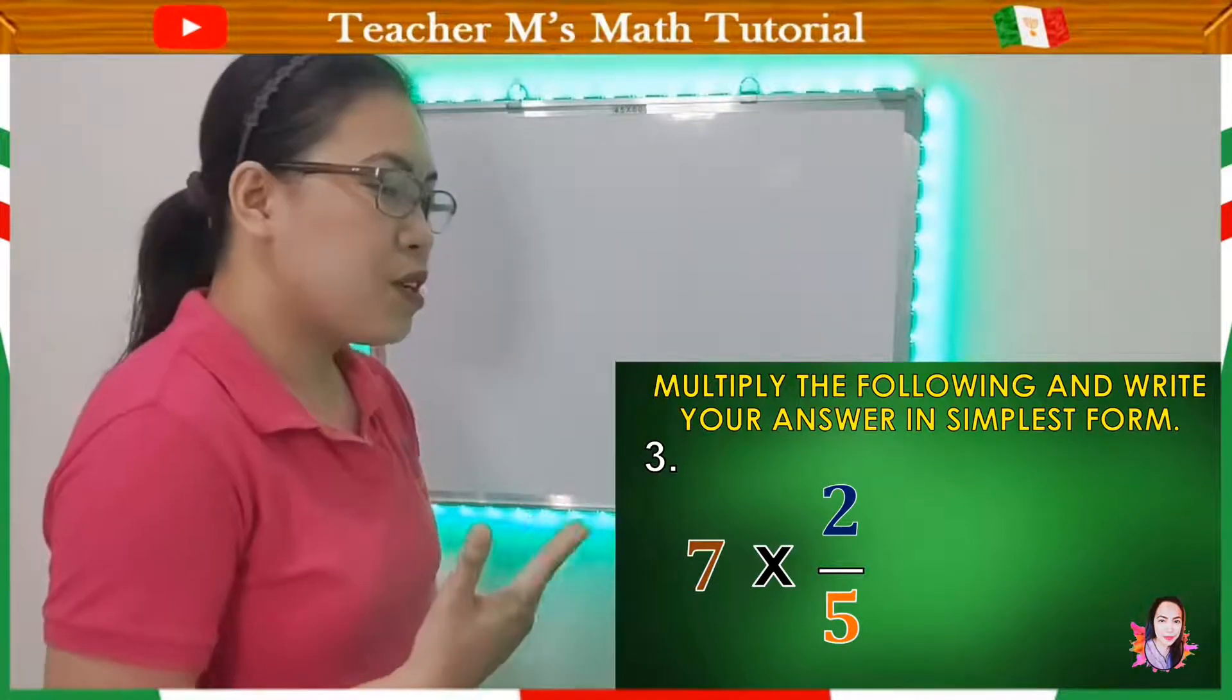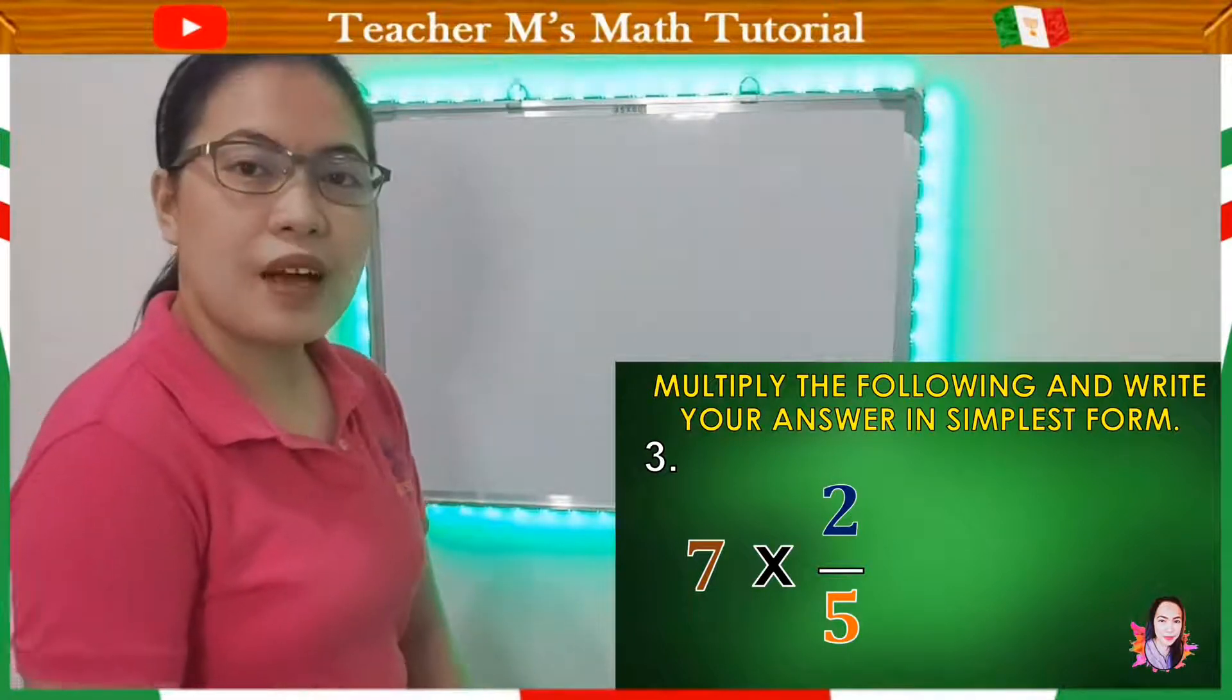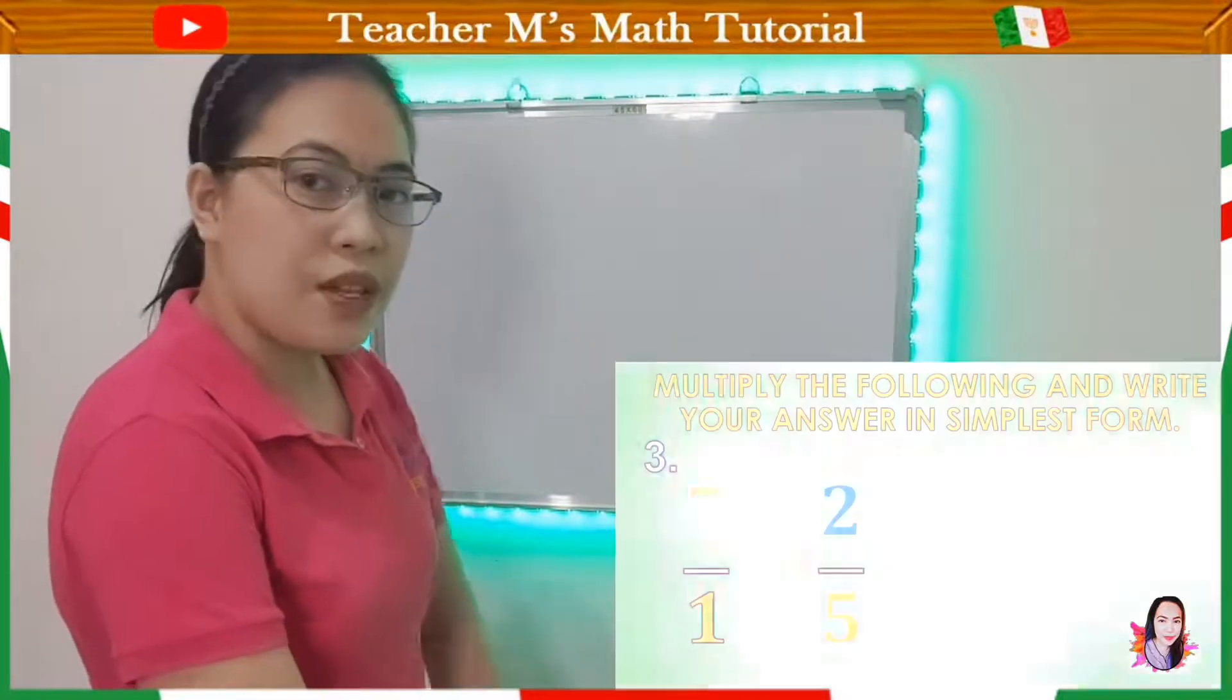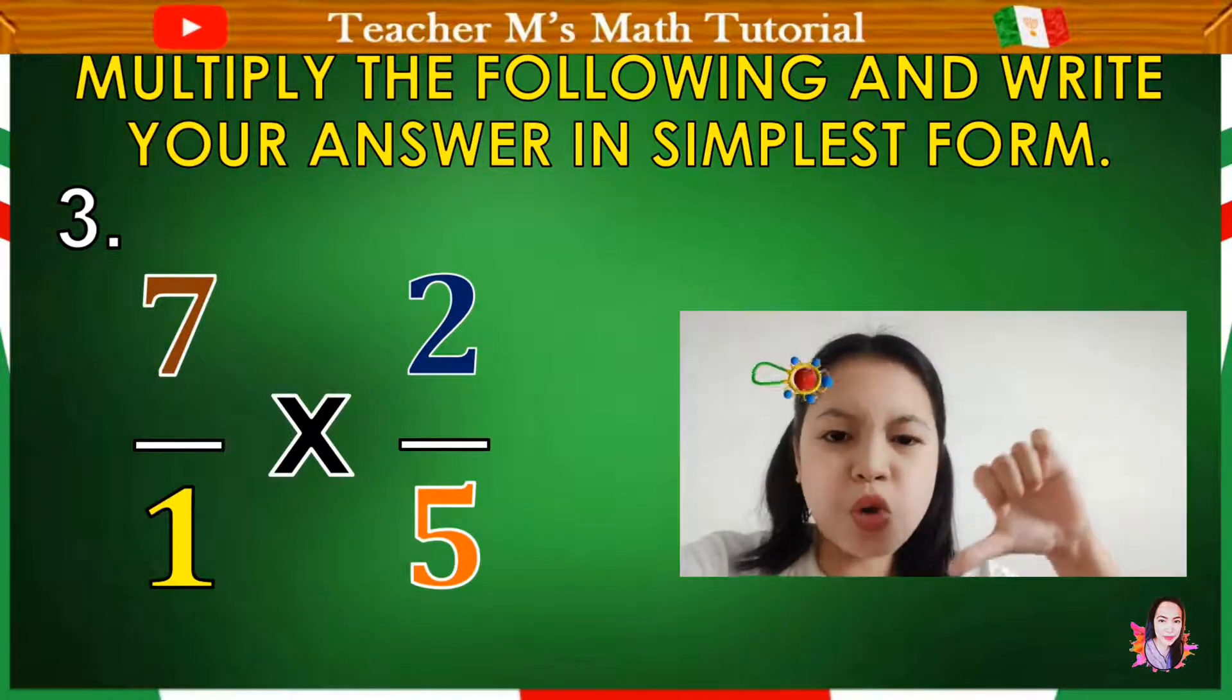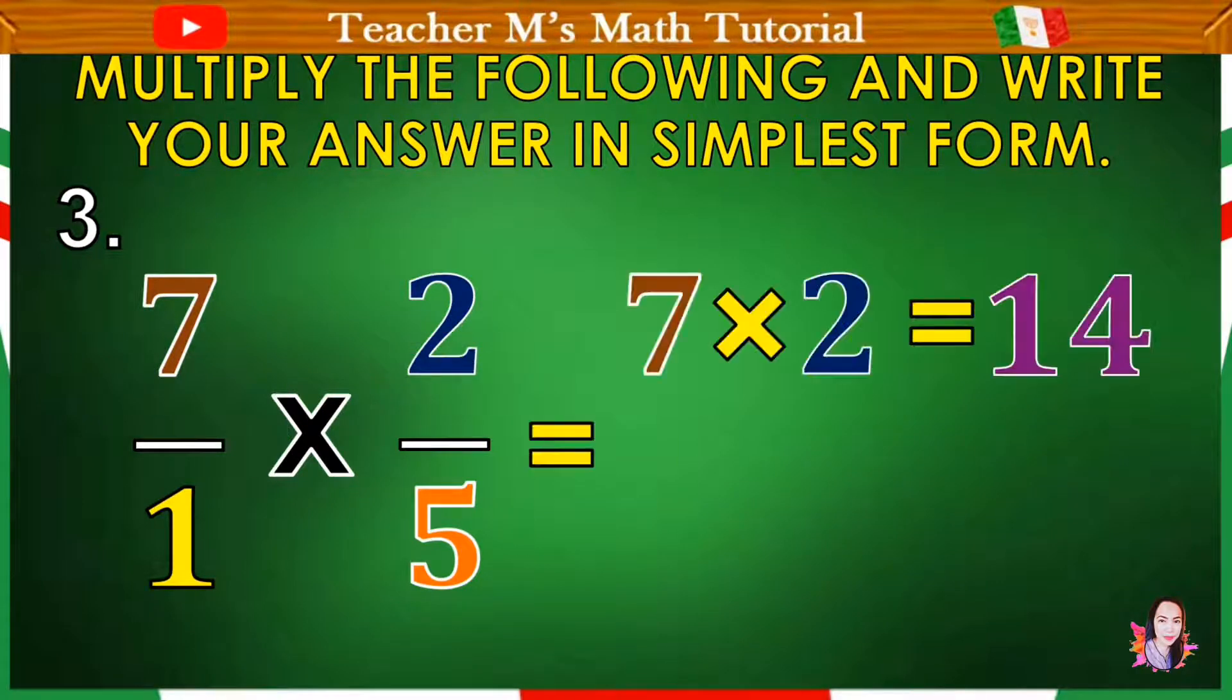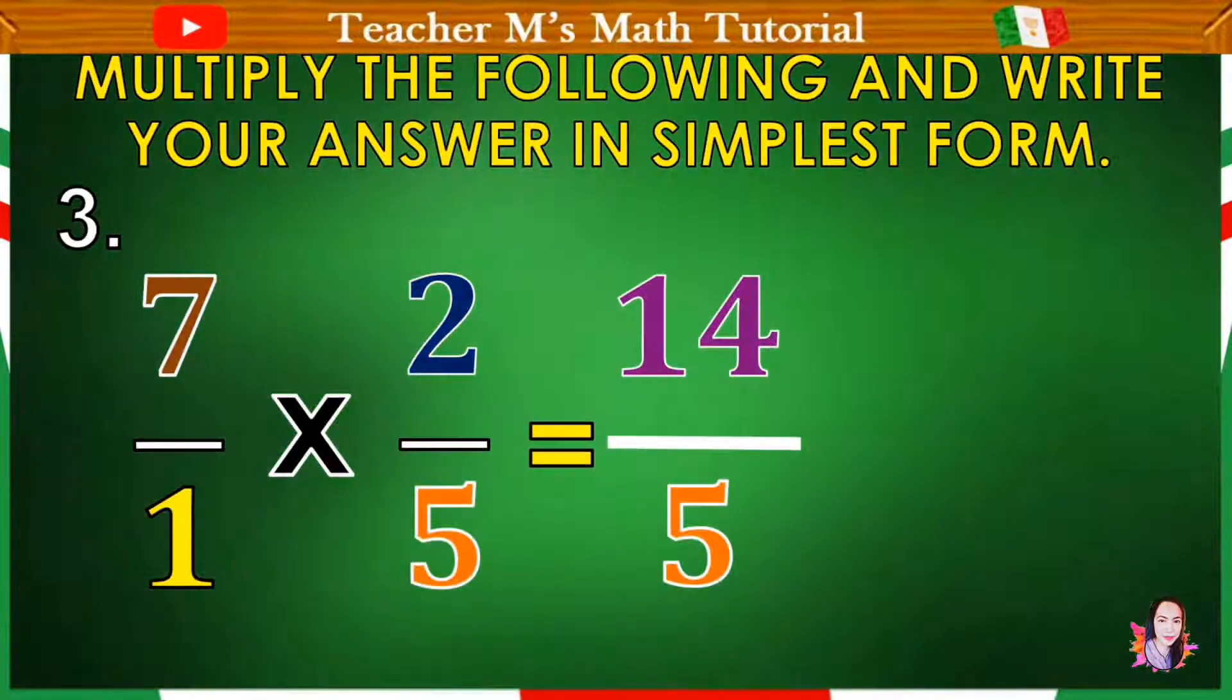So ano naman yung gagawin nyo kung imultiply natin yung whole number dun sa fraction? Anong kailangan kong gawin? So tapandaan, kapag whole number, kapag sinulat natin ito into fraction, the denominator will always be 1. So we can write it as 7 over 1 times 2 over 5. If cancellation is possible, then proceed to cancellation. So possible ba yung cancellation? Oo. Okay. So hindi pwede kasi walang common factors. Okay. So proceed now. 7 times 2 is 14. 1 times 5 equals 5.